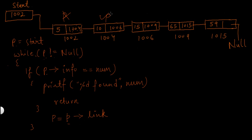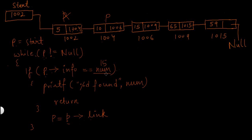Now p is storing the address of the second node, so p means this node. Again this while condition will be checked — p is not equal to null, so the while condition is true and the if condition will be checked. p->info means the info part of this node which is 10, and 10 is not equal to 15. So this if condition is false. The control moves to the next statement, and p->link, the address of the next node, will be assigned to p.